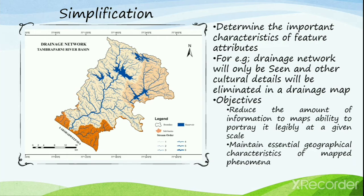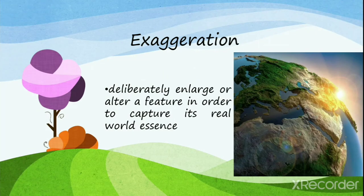There are two main objectives of the simplification process. One is to reduce the amount of information to the map's ability so that it can portray legibly at a given scale. The second is to maintain the essential geographical characteristics of the mapped phenomena.